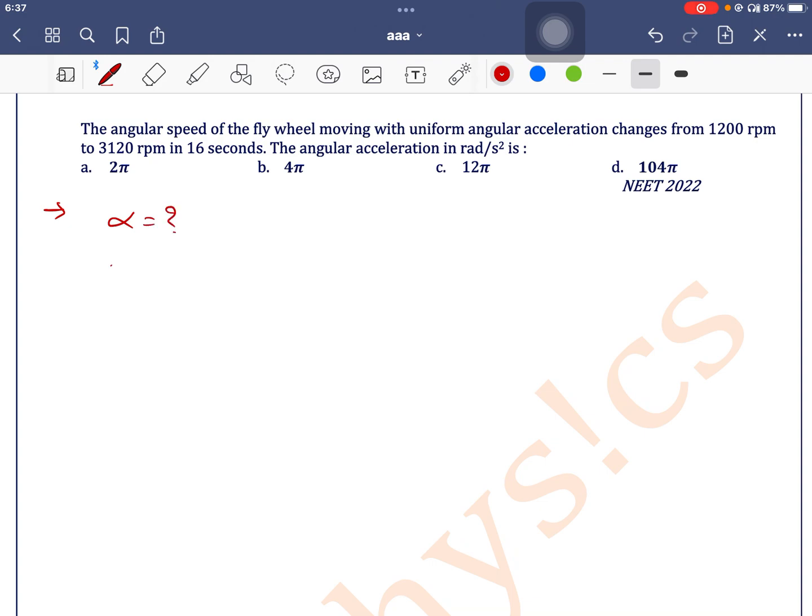Angular acceleration is what we need to find. Initial speed is given as 1200 rpm, so we can convert this rpm into revolutions per second: 1200 divided by 60 rps, which equals 20 rps. This is the value of initial speed.